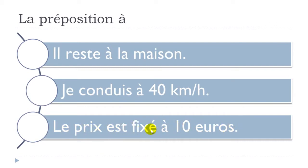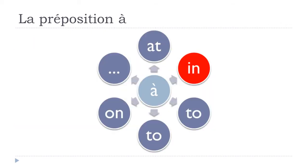So in these cases, À is translated as 'at': il reste à la maison, je conduis à 40 km/heure, le prix est fixé à 10 euros. If you want to express this 'at' concept in these situations, you have to use the preposition À.